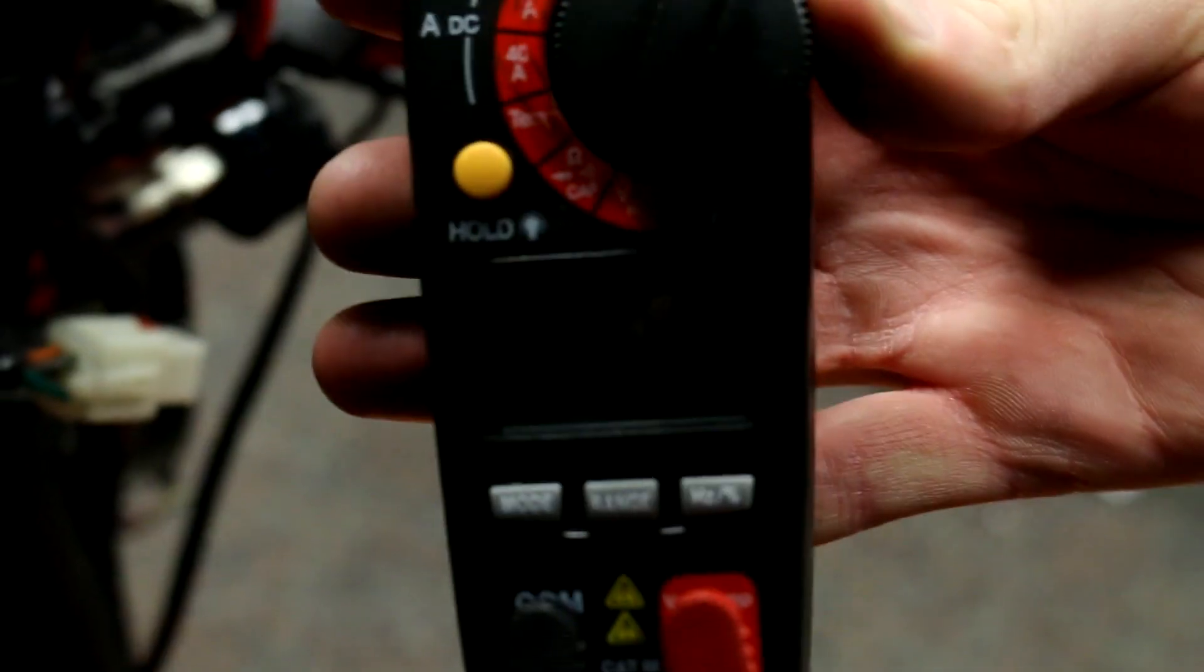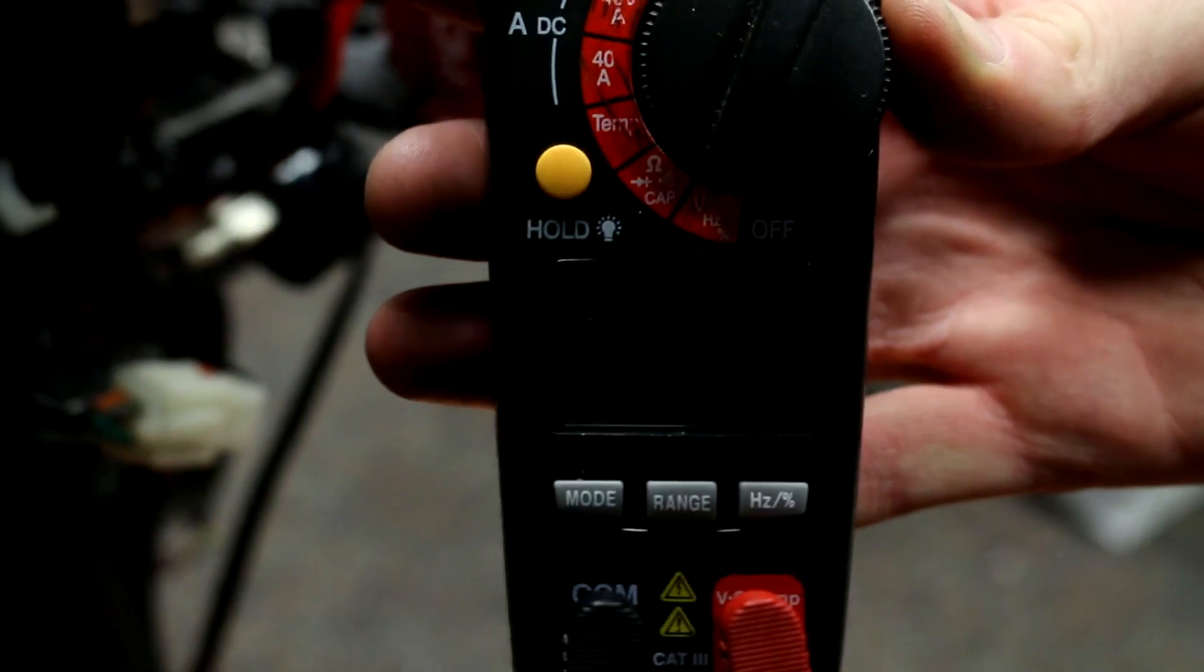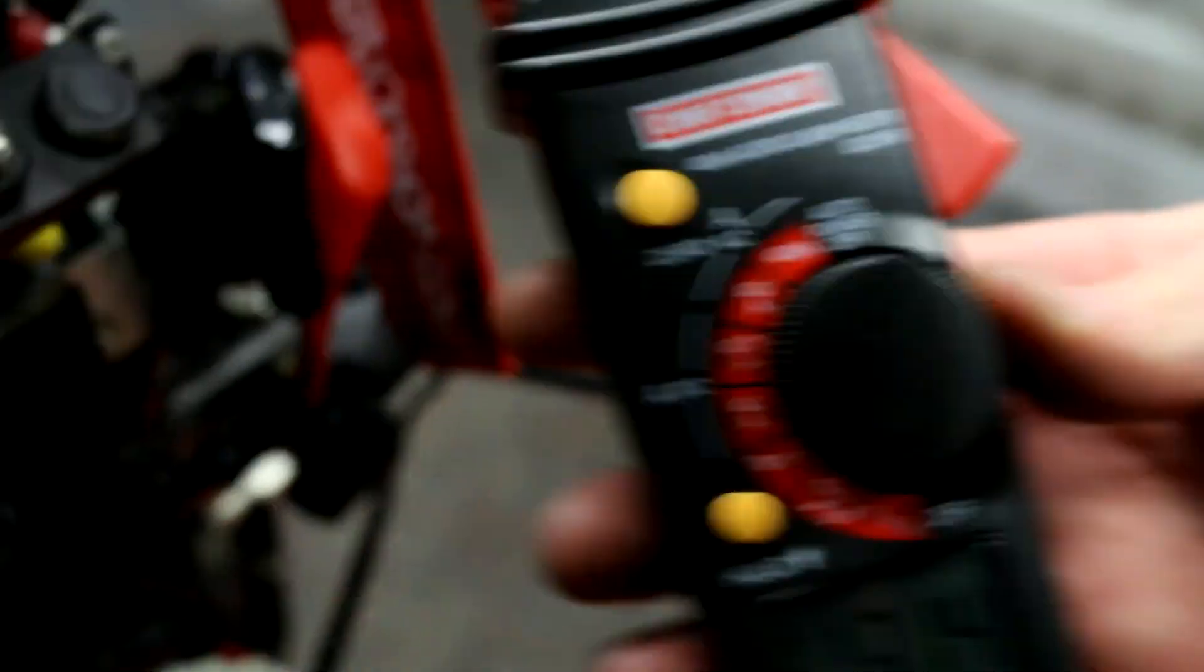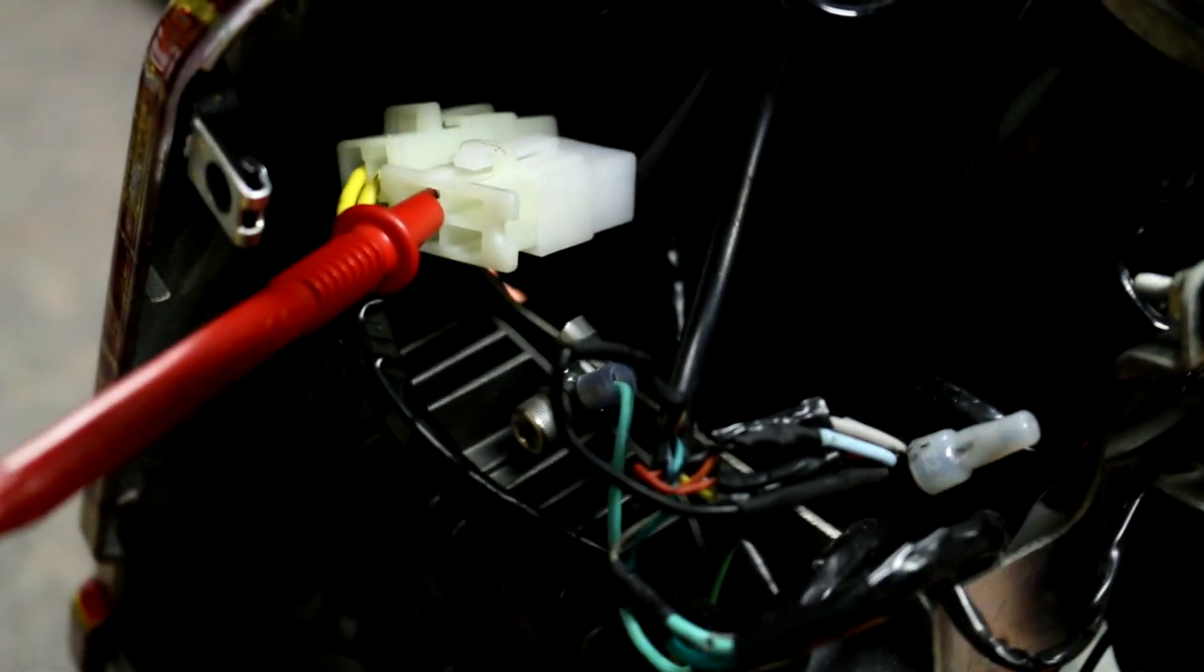And with the bike on, you should be able to get a reading. Ours right now is off and we're still getting our 13.1.